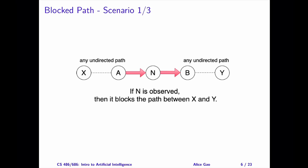In each of the three scenarios, we will look at one path between X and Y and consider one node N on the path. The three scenarios differ by the direction of the two arrows on both sides of N.